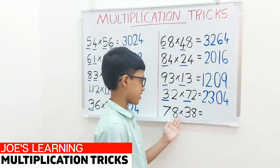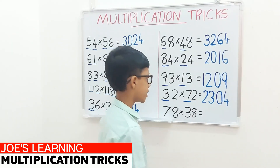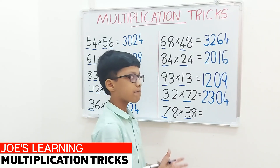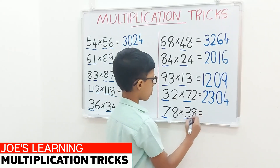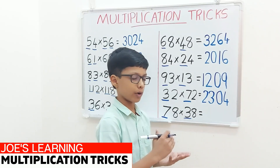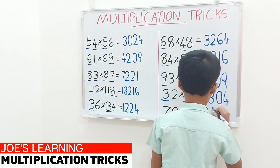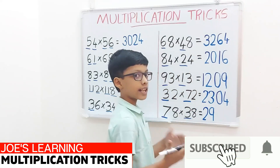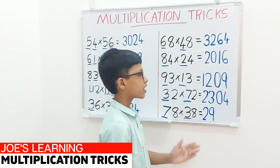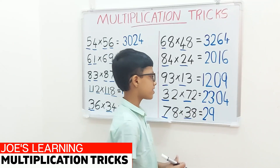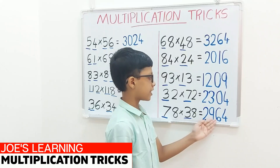Now let's move on to the example 78 multiplied by 38. First we have to look at the digits in the tens place, 7 and 3, and multiply them together. So 7 multiplied by 3 equals 21. Now we should add the digit in the ones place to it. So 21 plus 8 equals 29. Now we have got the first two digits of our product. To find the next two digits, multiply the digits in the ones place, which is 8. 8 multiplied by 8 equals 64. So 78 multiplied by 38 equals 2964.